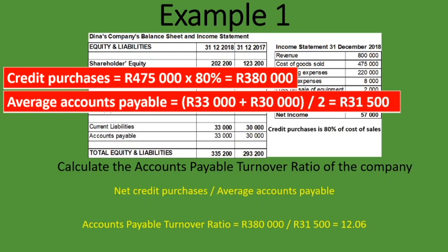The ratio has decreased. That could be good or bad. A possible explanation is that the company is unable to pay its creditors when payment becomes due, indicating liquidity problems. Or it could mean the company has secured favorable terms with its suppliers — a longer payment period, meaning it doesn't have to pay as frequently as it did last year. Those are the possible ways to analyze and interpret this ratio.